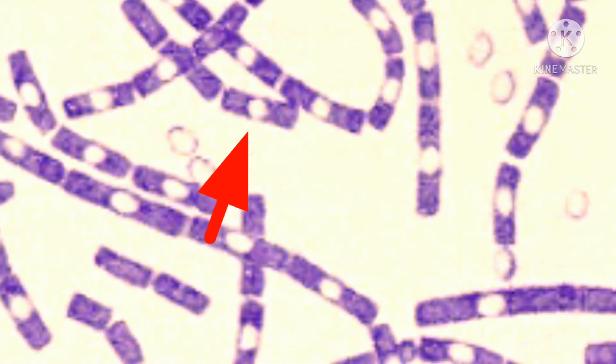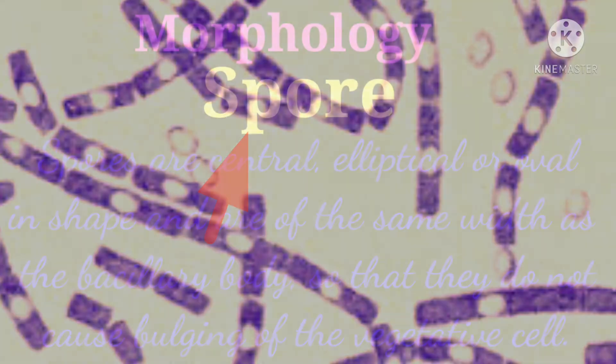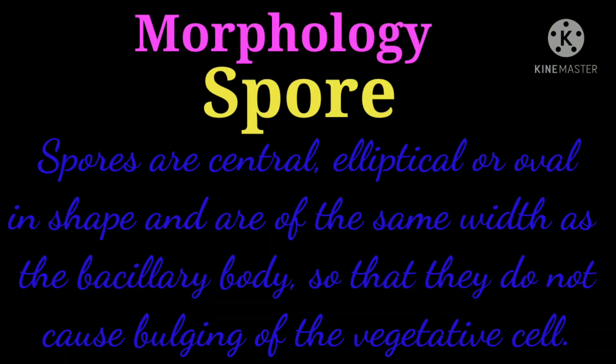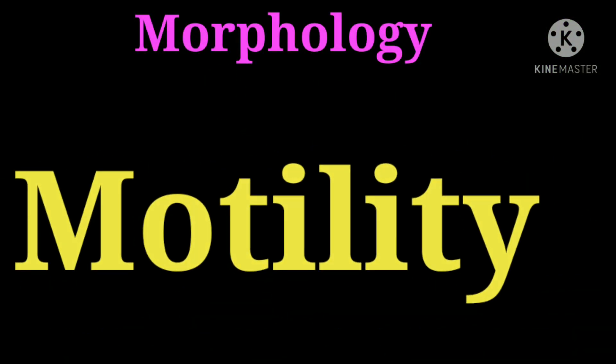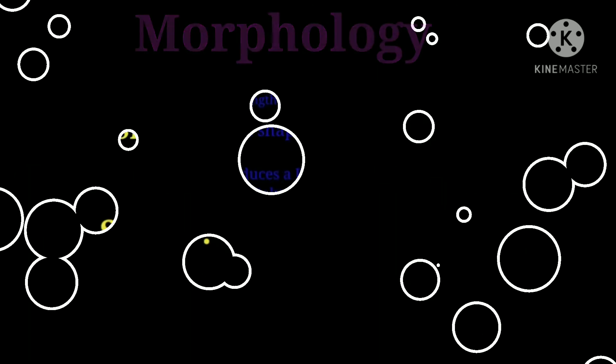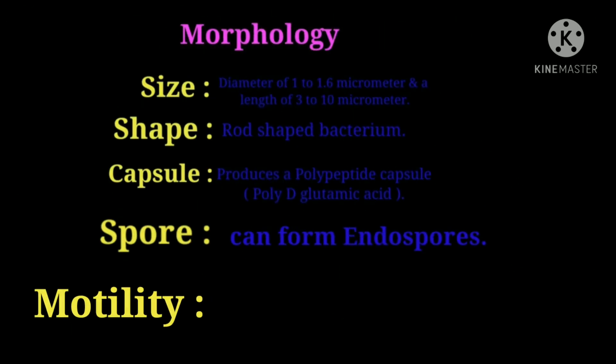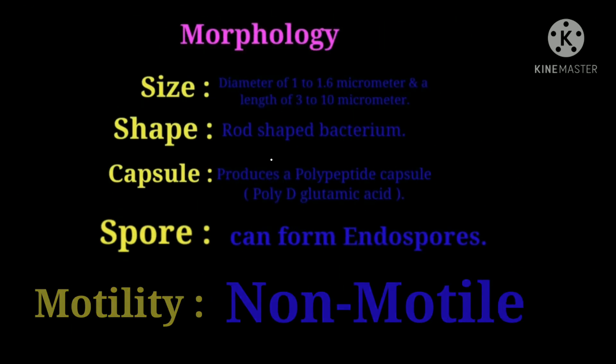Spores are central, elliptical or oval in shape, and are of the same width as the bacillary body, so that they do not cause bulging of the vegetative cell. Motility: the anthrax bacillus is non-motile.